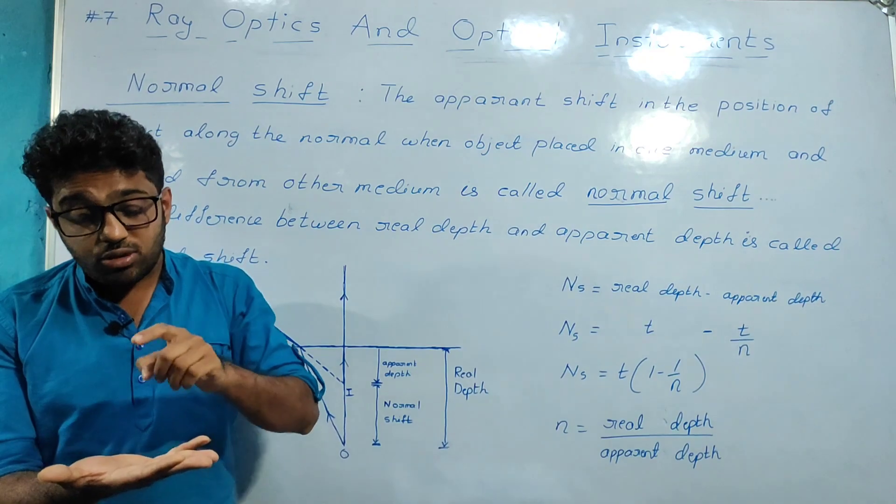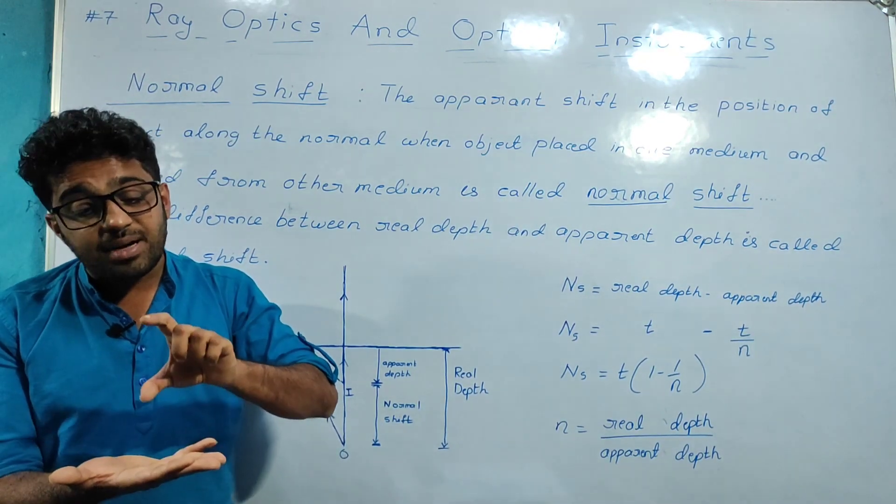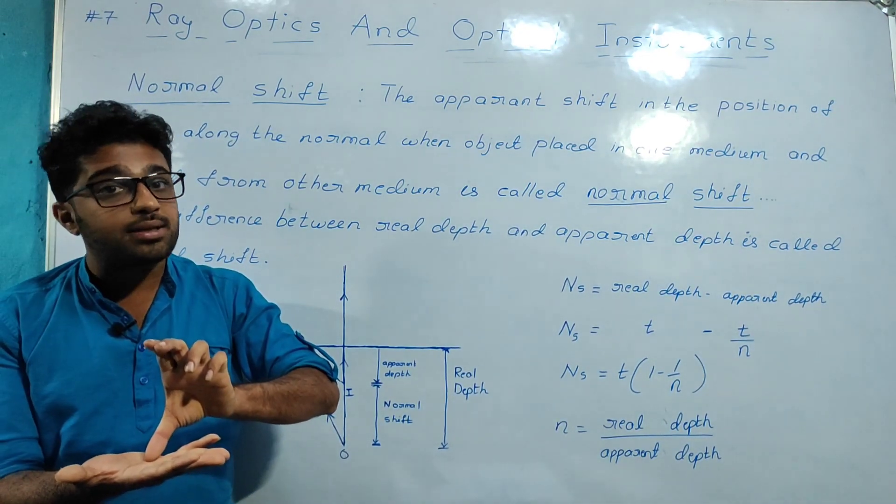There is an actual depth and an apparent depth. The difference between the real depth and the apparent depth is the normal shift.